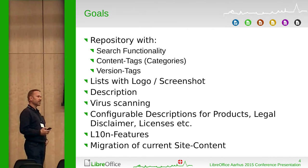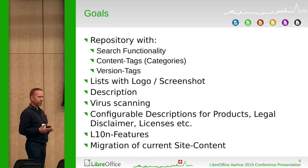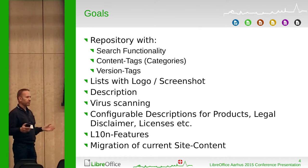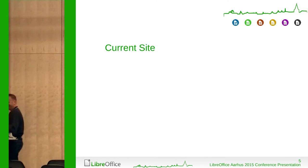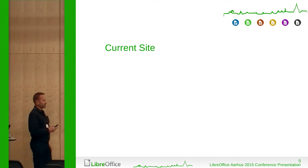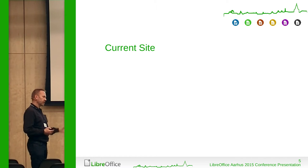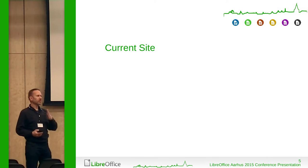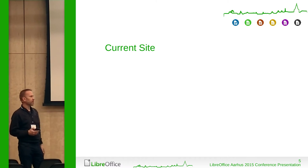The content currently exists across two separate sites — one for extensions and one for templates. That's not visible from the web, but they are currently two separate sites. In the future, it will be one site with two applications running the different stuff for extensions and for templates. We also have to transport the content from the current site to the new one. That will be a special process because the structure will be a bit different, as I'll show later.